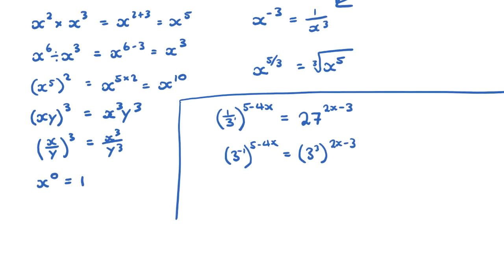Now I have a power to a power on both sides, so I multiply the powers. On the left: 3 to the power of negative 1 times (5 minus 4x), which gives negative 5 plus 4x. On the right: 3 to the power of 3 times (2x minus 3), which gives 6x minus 9. Now I have 3 to the power of something equals 3 to the power of something — since the bases are the same, the powers must be equal.